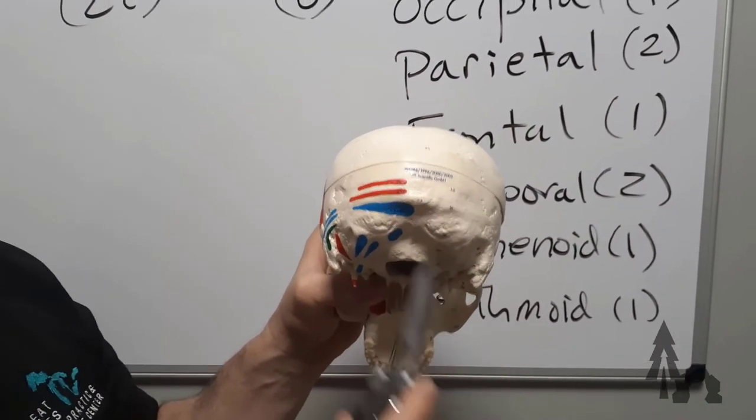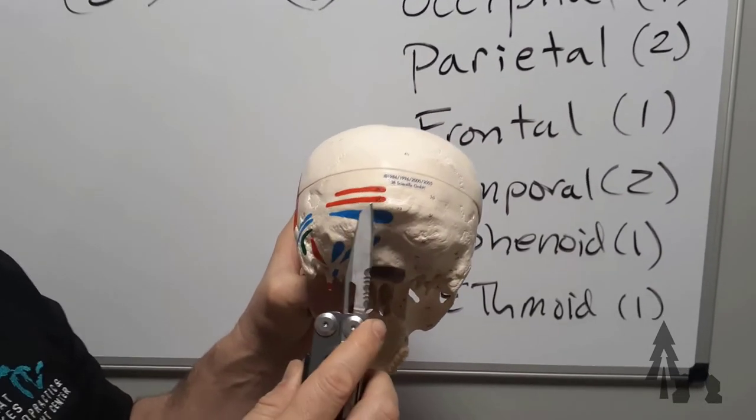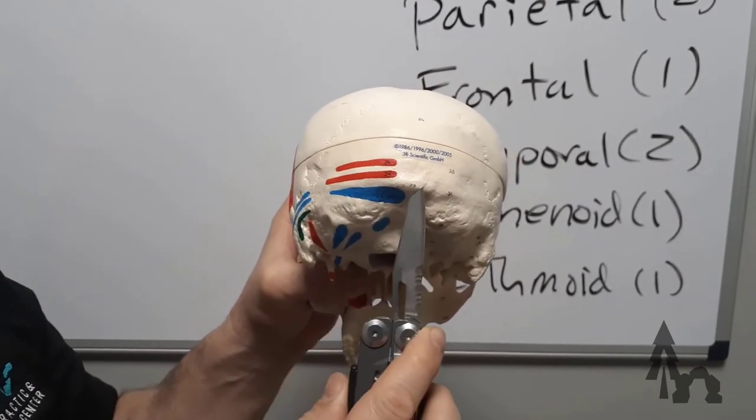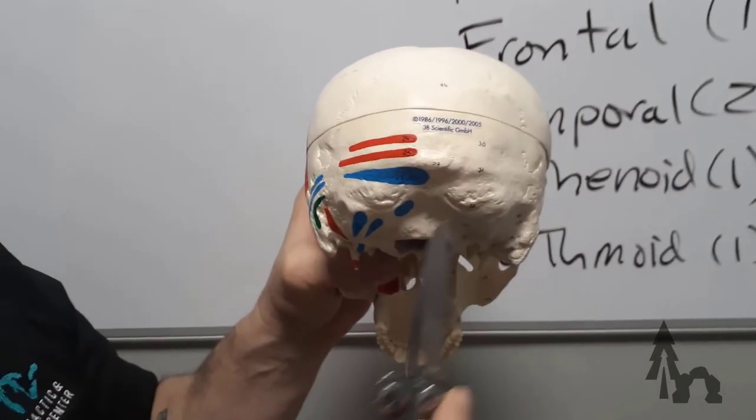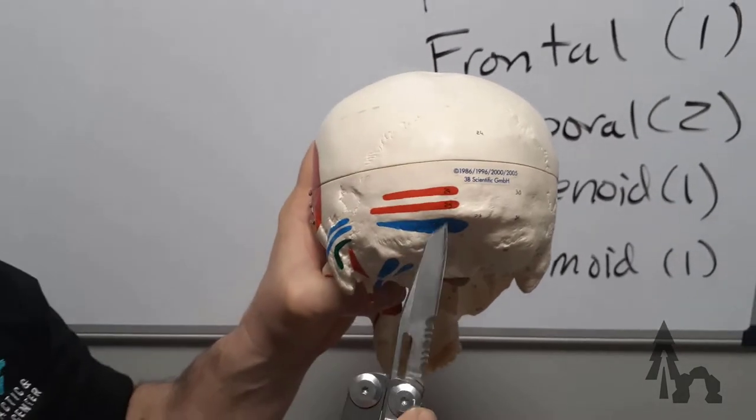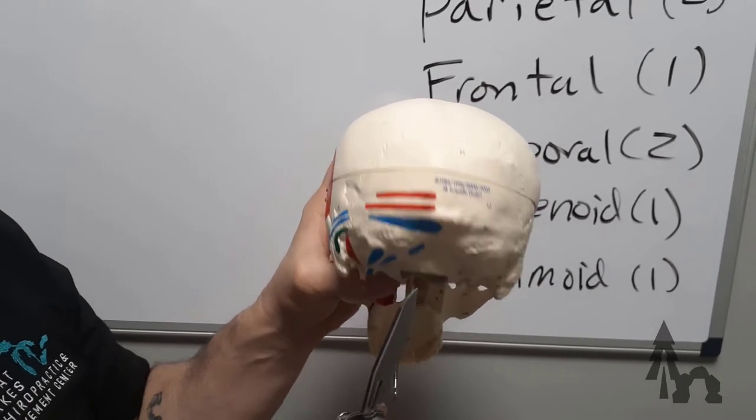Now running parallel to the external occipital protuberance, or EOP, you're going to have superior and inferior nuchal lines that run out like this. These are these little lines that run out from the EOP that have a lot of muscular attachments on this model indicated by these red and blue painted areas. Nuchal lines. You might be able to palpate that on your own skull.